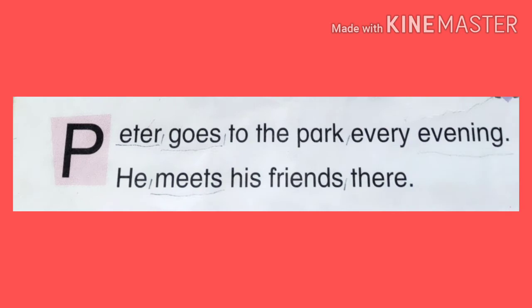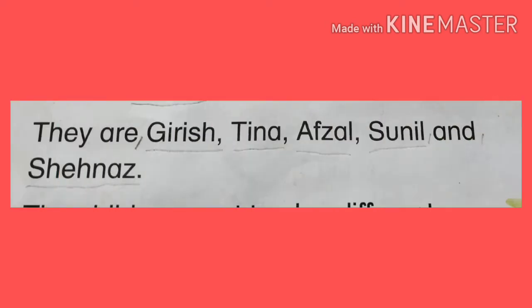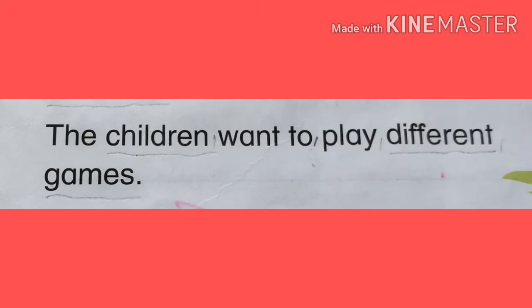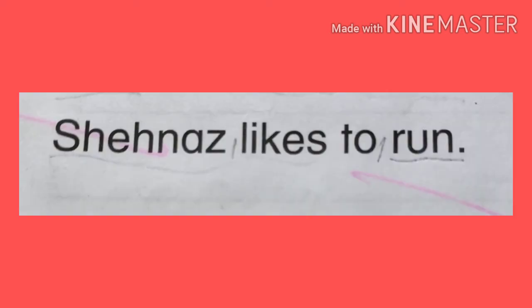Peter goes to the park every evening. He meets his friends there. They are Girish, Tina, Afzal, Sunil and Shainaz. The children want to play different games. Peter wants to climb on the monkey bar. Sunil and Girish like to play catch. Tina and Afzal want to play football. Shainaz likes to run.